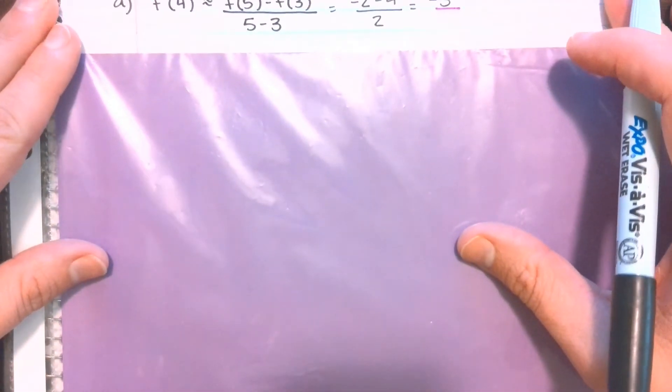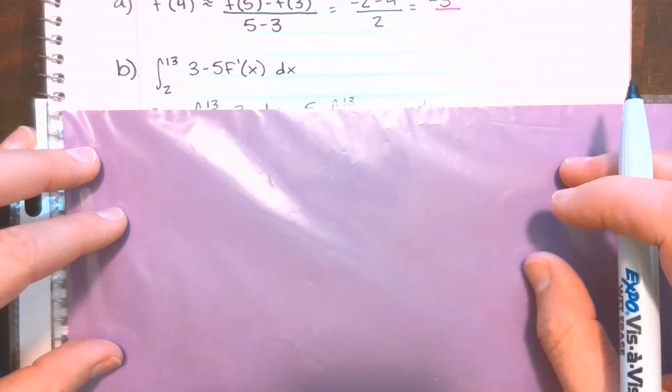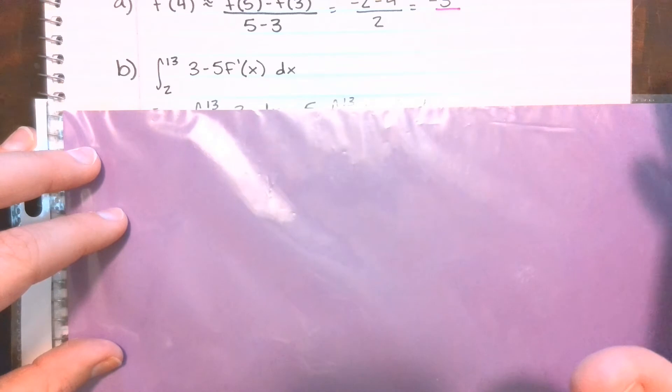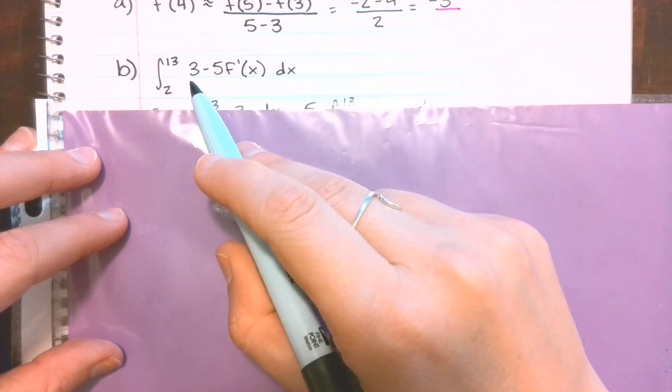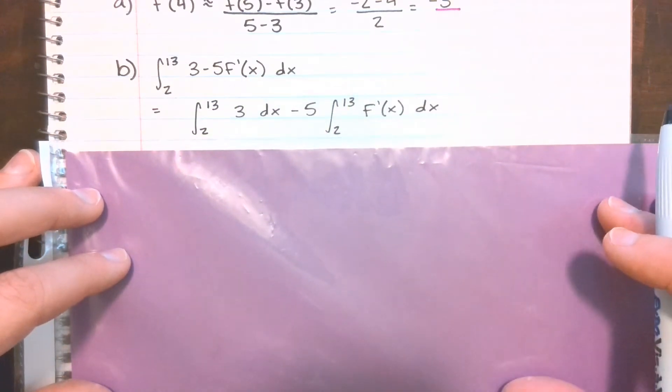For part b, they ask us to find this definite integral, which seems a little weird, but it's not really that bad. We do want to go ahead and separate the three and then this negative five f prime of x.